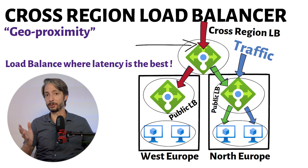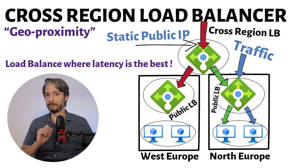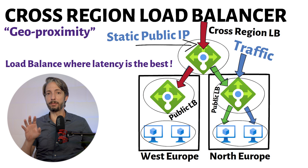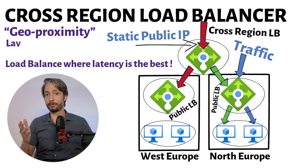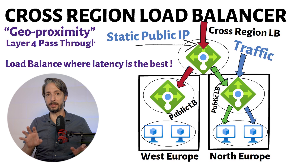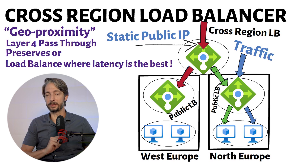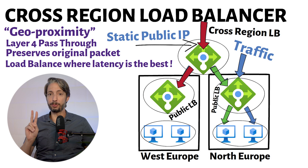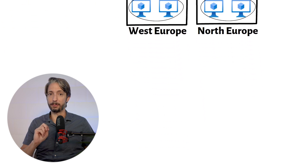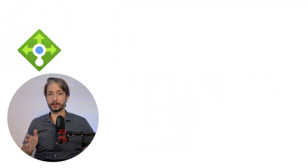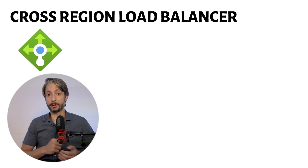The cross-region load balancer always comes with a static public IP address to ensure that the IP address always remains the same. This load balancer is a Layer 4 passthrough network load balancer, so in practice it means that it preserves the original IP of the packet.